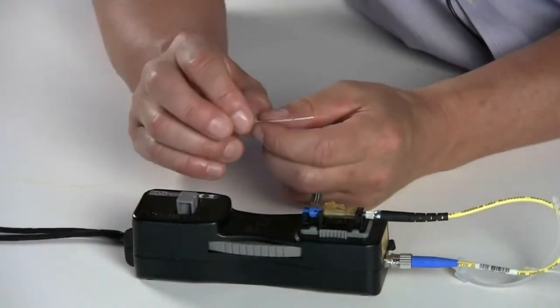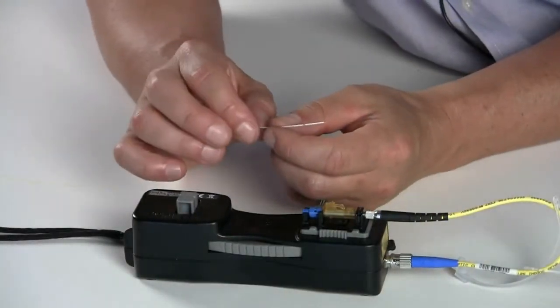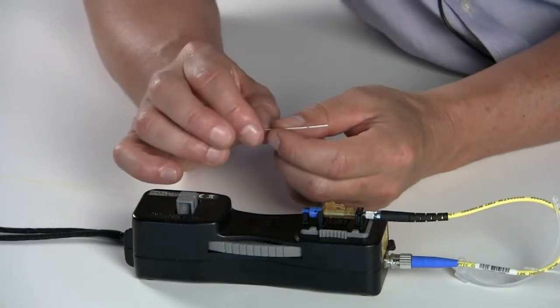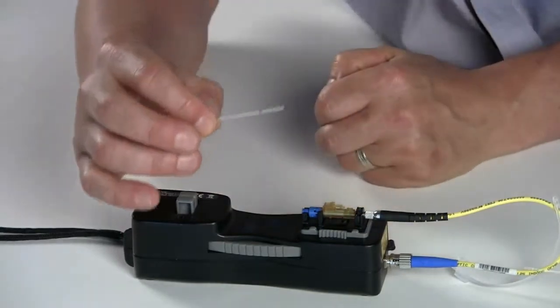After cleaving the fiber, slowly slide the buildup tube until the edge of the fiber cleave and the edge of the buildup tube are even.